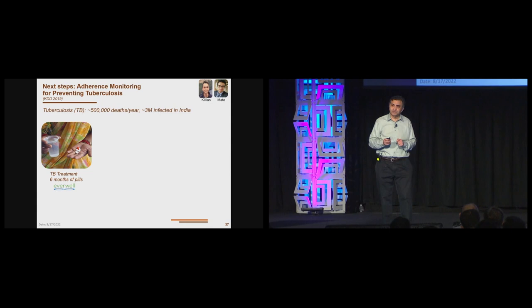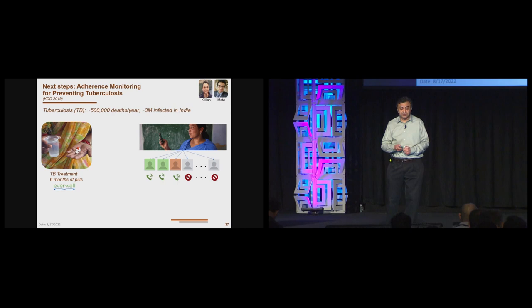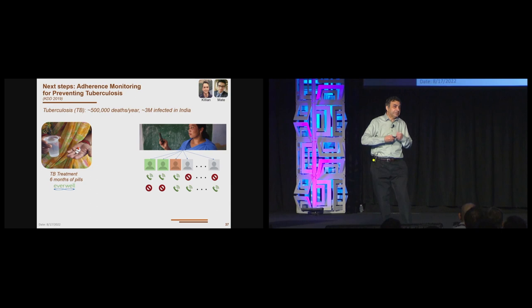But we don't have to stop only at maternal and child care. The applicability of restless bandits applies to many other health adherence problems. For example, preventing tuberculosis. This is the other pandemic the world faces and is still going on. In India alone, TB kills half a million people per year and three million people are infected. A TB patient requires to be taking pills every day for six months. I get tired if I'm asked to take pills for six days. Here for six months, that's very difficult. So again, we have a health worker who has to remind people to take their medicine. The health worker has no idea whether the patient has taken their medicine or not.